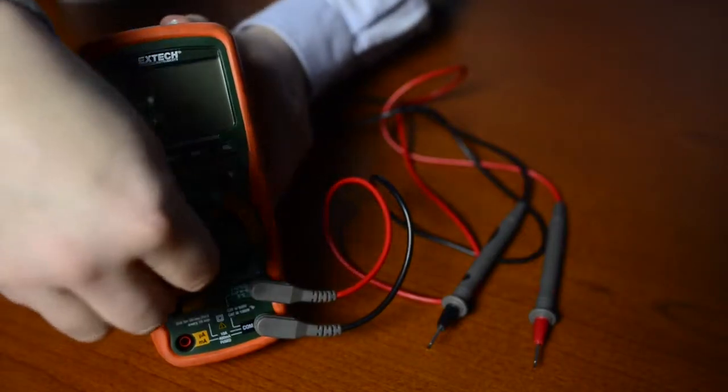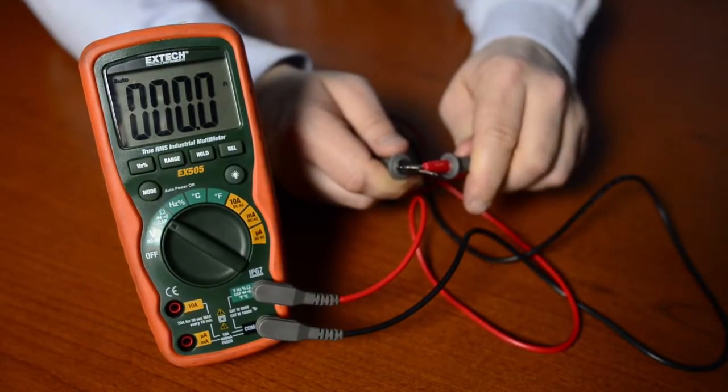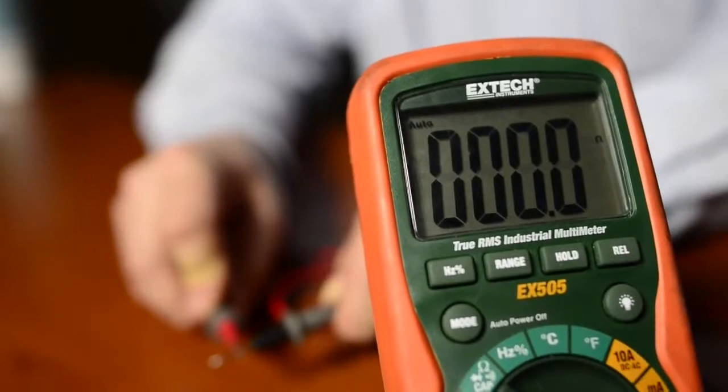One of the most common pre-checks we want to do is to actually check the meter leads. In order to do that, we're going to turn our meter onto ohms. See right now we have OL reading. We're going to take our two leads together and we should zero out, which we do.